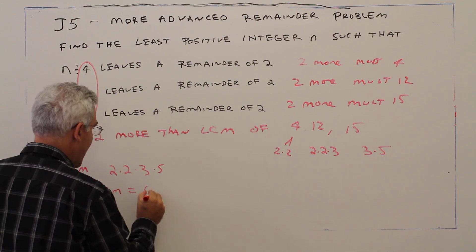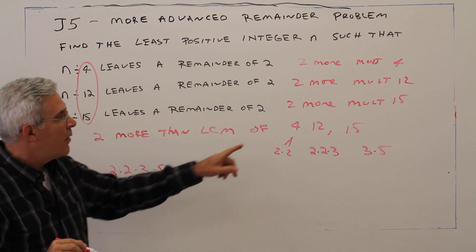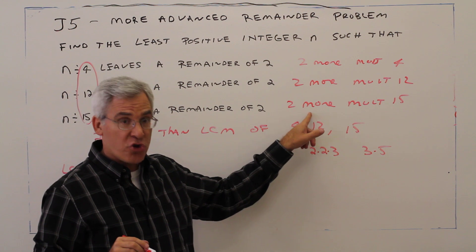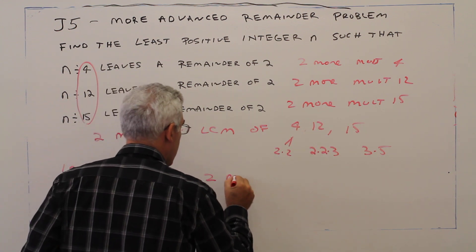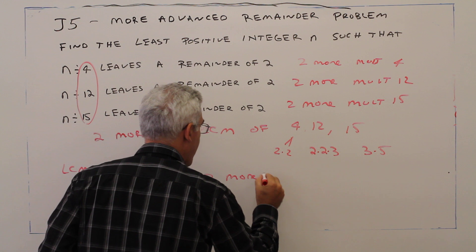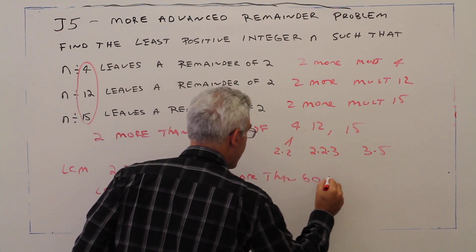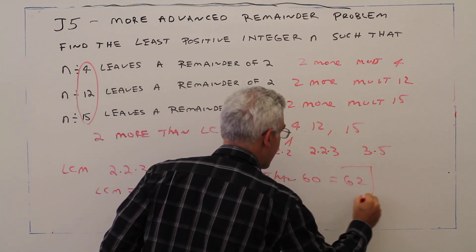So that's 4 times 3 is 12, times 5 is 60. Two more than 60 is 62.